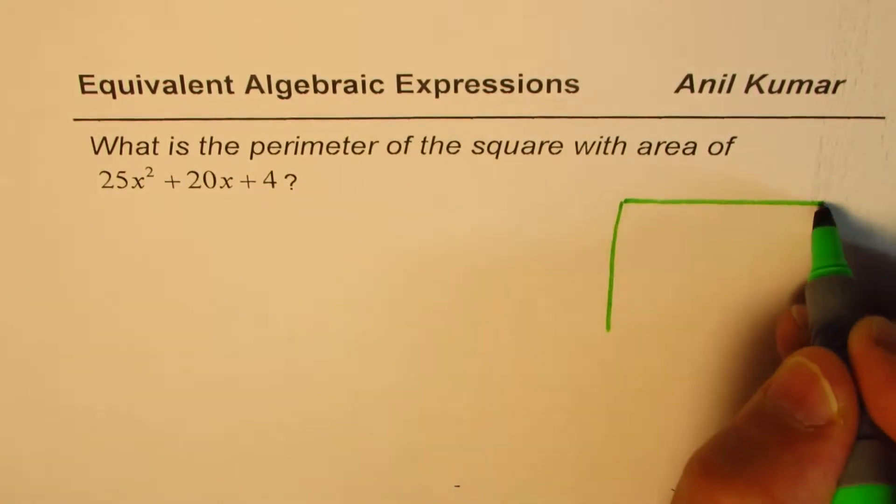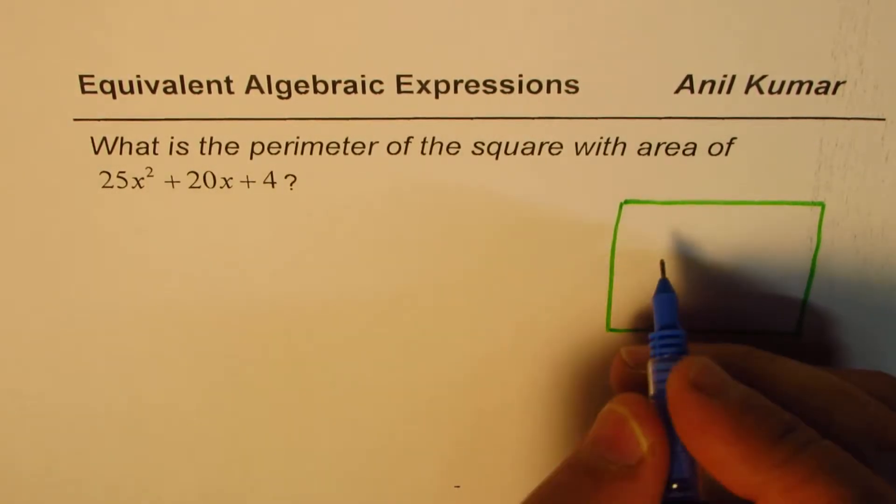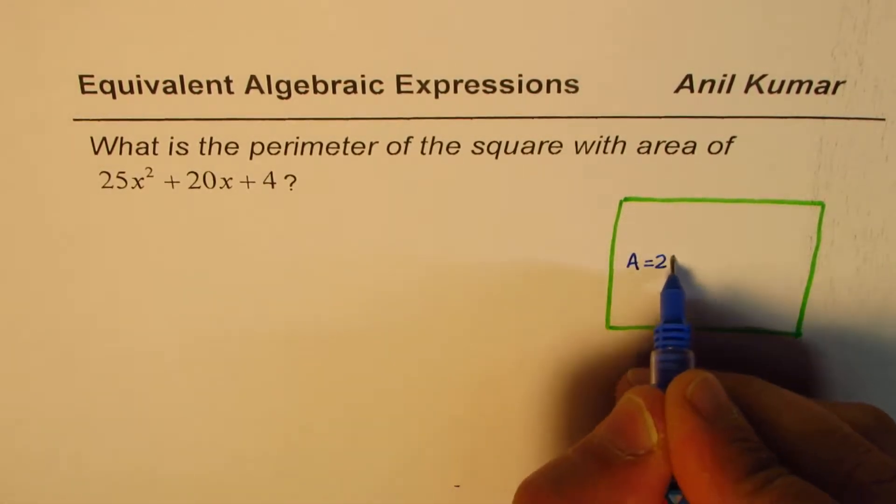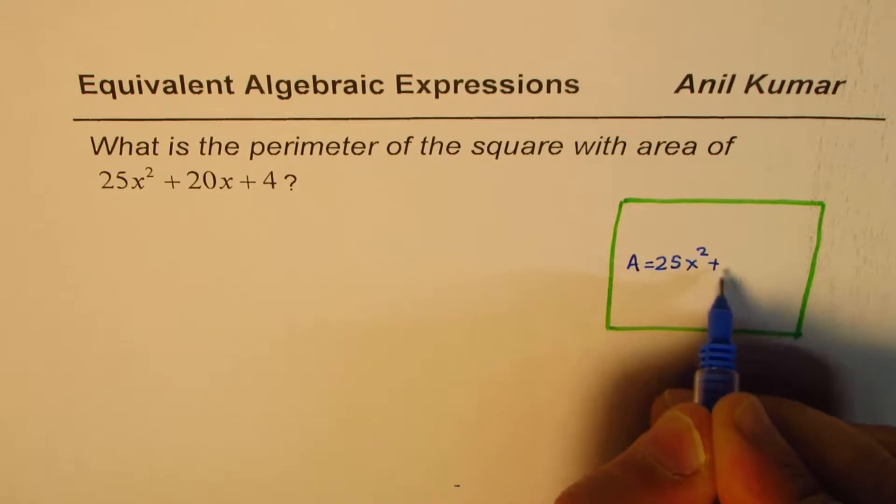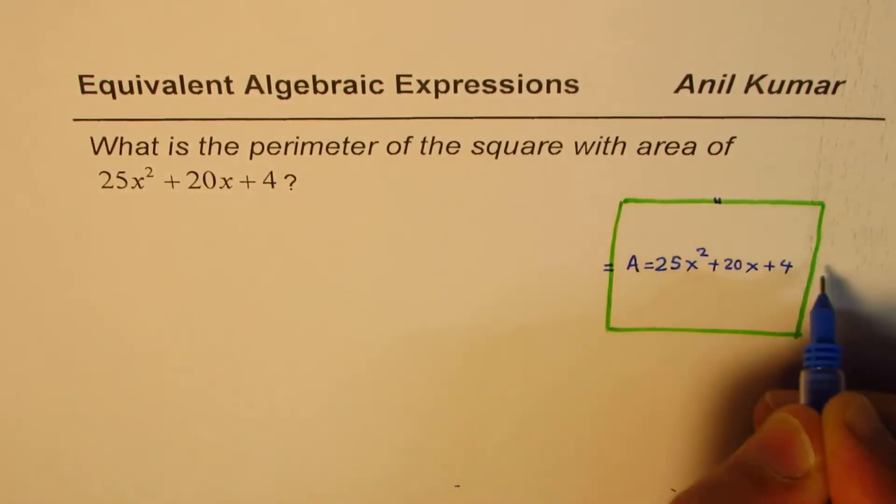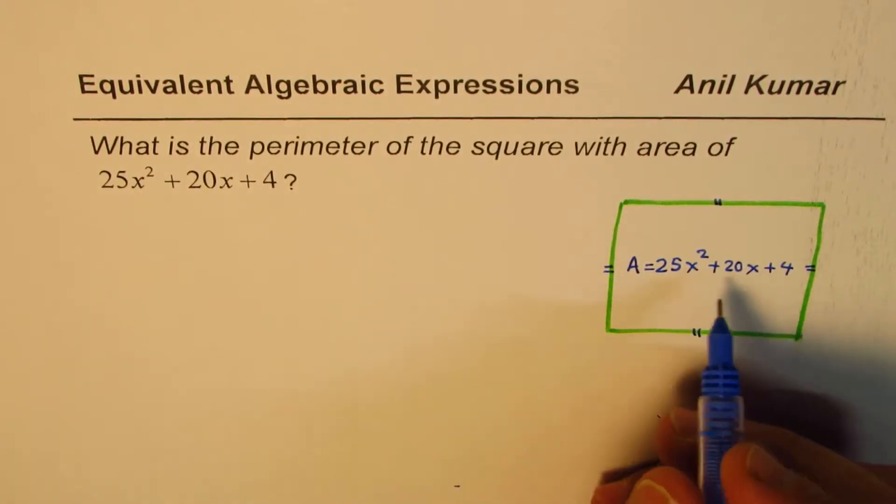We have the area of a square, and we are given area A = 25x² + 20x + 4. In a square, all sides are equal, and we need to find the perimeter.